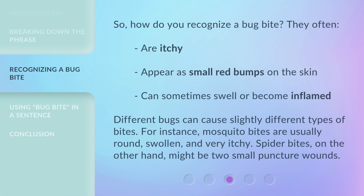So, how do you recognize a bug bite? They often are itchy, appear as small red bumps on the skin, and can sometimes swell or become inflamed. Different bugs can cause slightly different types of bites. For instance, mosquito bites are usually round, swollen, and very itchy. Spider bites, on the other hand, might be two small puncture wounds.